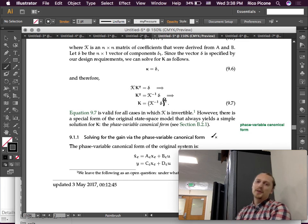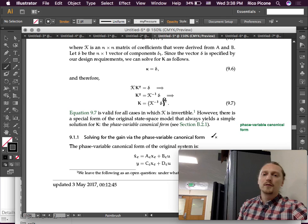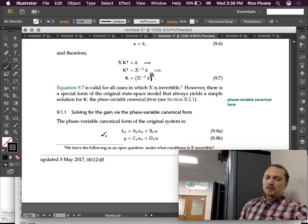Alright, so now, we have a phase variable canonical form which is now just one more tool in our tool belt. We can convert over to phase variable canonical form if we want to. And, it turns out in this case, we will want to. So, let's use that. So, solving for the gain via the phase variable canonical form. The phase variable canonical form of the original system is given in equation 9.8.